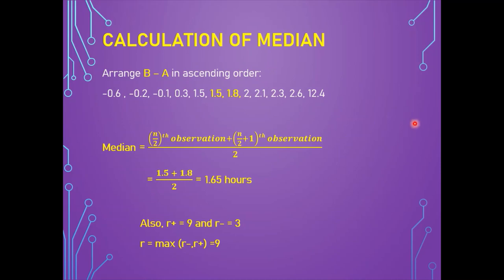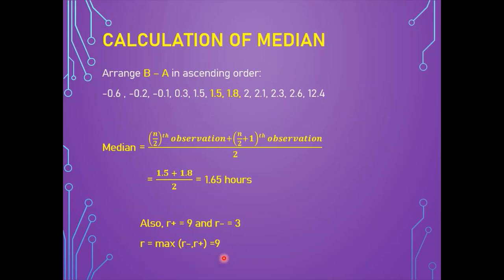Arranging the difference values in ascending order and applying the median formula for an even number of observations gives a median of 1.65 hours. There are 9 positive values (r+ = 9) and 3 negative values (r− = 3). The r value for the sign test is the maximum of r+ and r−, which is 9.